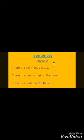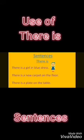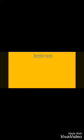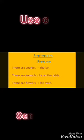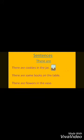Here are sentences using 'there is': There is a girl in a blue dress. There is a new carpet on the floor. There is a plate on the table. Now here are sentences using 'there are': There are cookies in the jar. There are some books on the shelf.